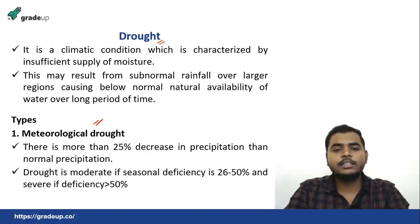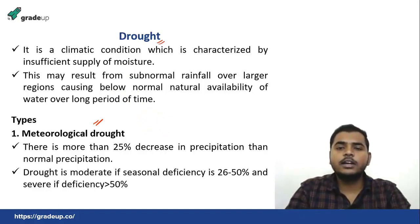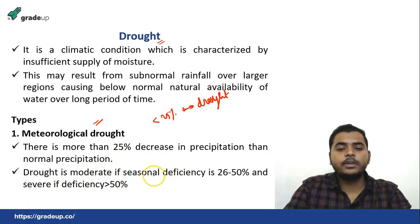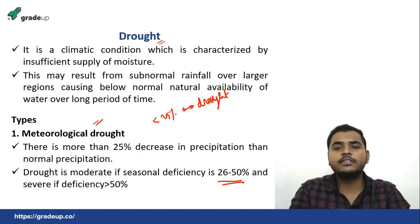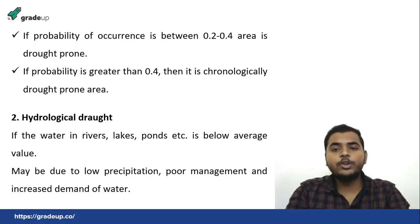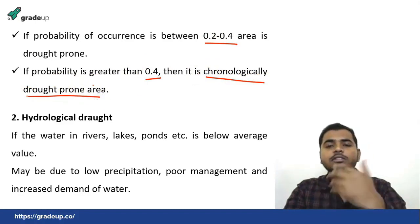Meteorological drought may further be classified into normal drought, moderate drought, or severe drought. In normal drought, the seasonal deficiency of rainfall is below 25 percent. When it is from 26 to 50 percent it is moderate drought, and when the deficiency is greater than 50 percent then it is regarded as severe drought. According to area, we can divide it into a drought-prone zone or a chronically drought-prone zone. If the probability of occurrence is between 0.2 to 0.4 it is termed a drought-prone area, and if probability is greater than 0.4 it is termed a chronically drought-prone area.